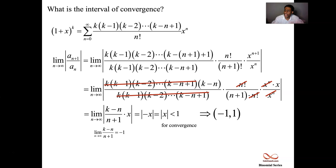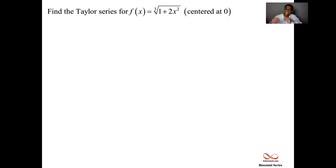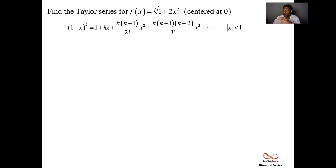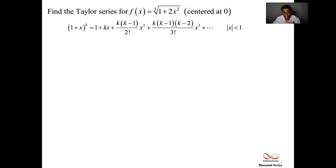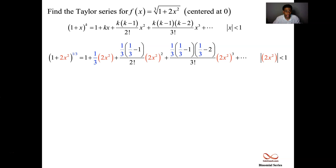Now let's answer a typical exam question. We have the cube root of (1+2x²), which is (1+2x²)^(1/3). We want the first few terms of the series and the interval of convergence. The thing playing the role of x in our formula is 2x², so every place we see x we put 2x². The value of k is 1/3 since that's the fractional exponent for the cube root. Replace every k with 1/3 (shown in blue) and every x with 2x² (shown in red), including in the interval of convergence.